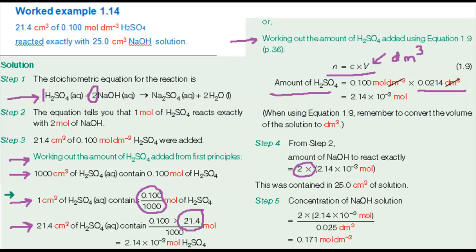This amount was contained in 25 centimetres cubed solution. That's 0.025 decimetres cubed. To find the concentration of the sodium hydroxide solution, you need the amount in one decimetre cubed. So, you divide the amount in 25 centimetres cubed by 0.025 decimetres cubed, which gives a concentration of 0.171 moles per decimetre cubed.